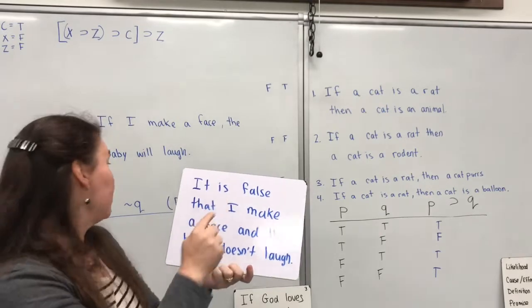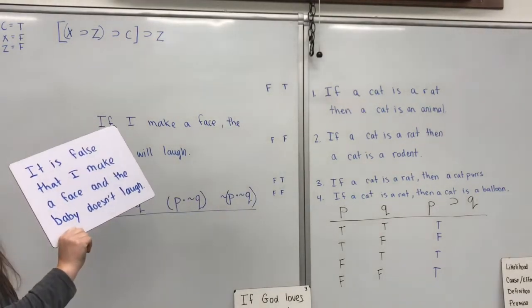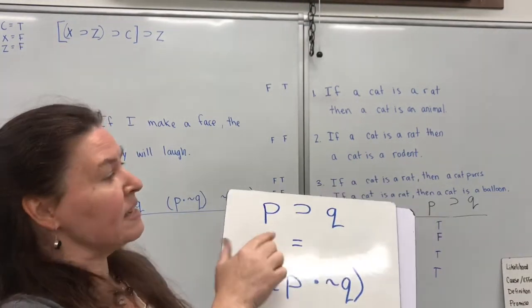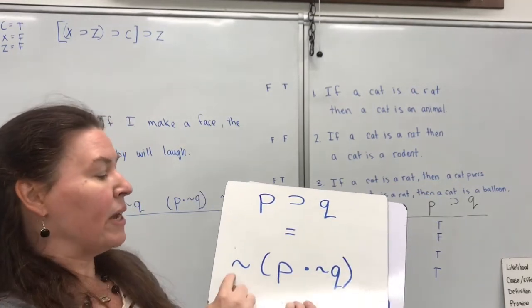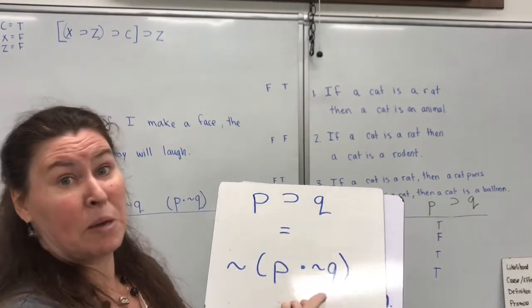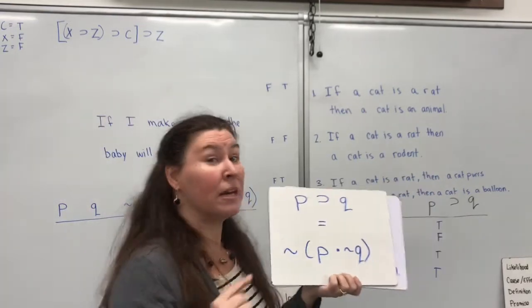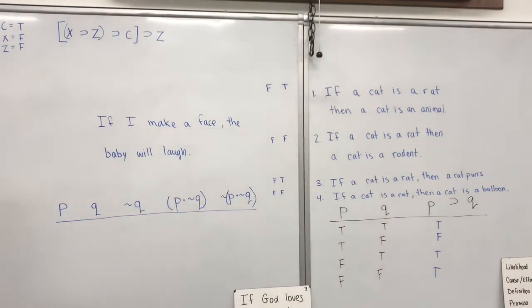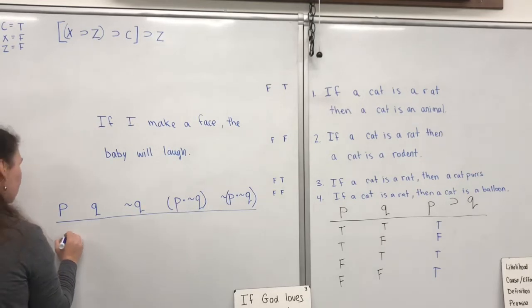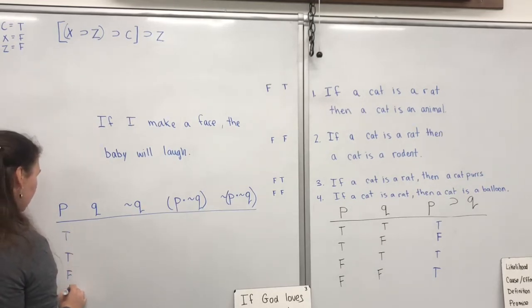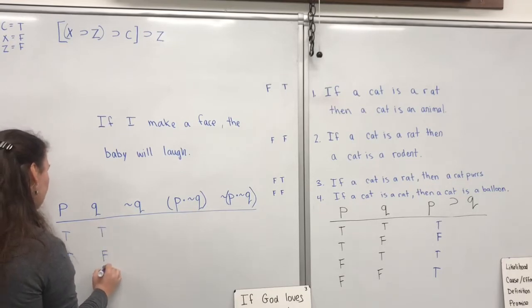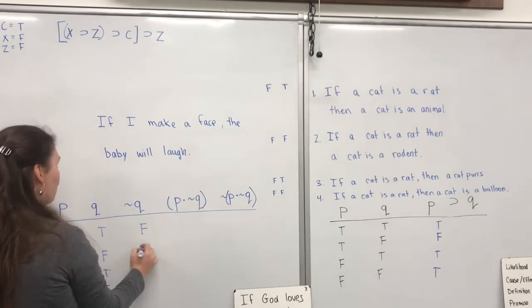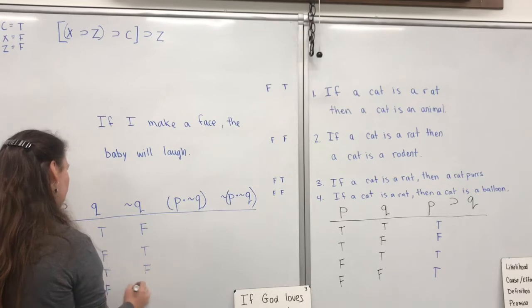So P stands for 'I make a face' and Q stands for 'the baby laughs.' So it is false that I make a face and the baby does not laugh. Let's do this truth chart. So I have it with P's and Q's, and since there are just two of them, there are going to be four rows: true, true, false, false for P; true, false, true, false for Q. Then I negate my Q: true turns to false, false turns to true, true turns to false, false turns to true.